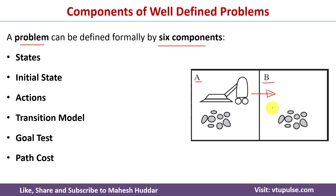Moving from location A to location B is known as the right action. When it is present in location B, it can go left — that is known as the left action. Whenever it senses there is dirt in a particular room, it will suck that dirt. That is another action the AI-based vacuum cleaner will perform. This is how the vacuum world example looks.